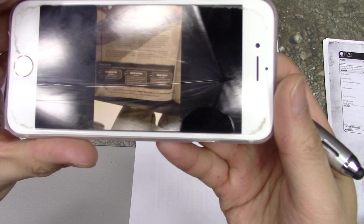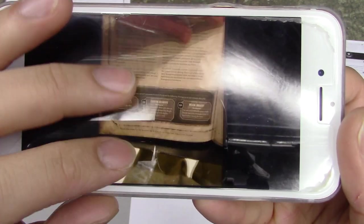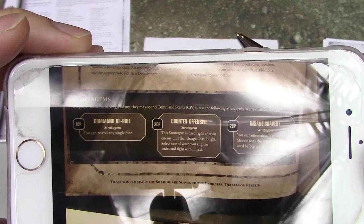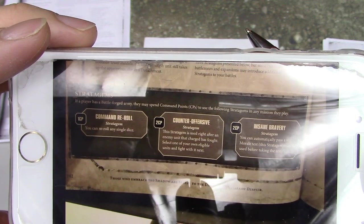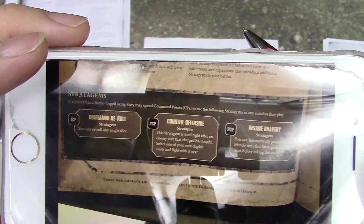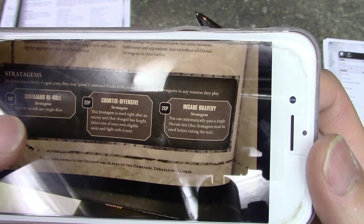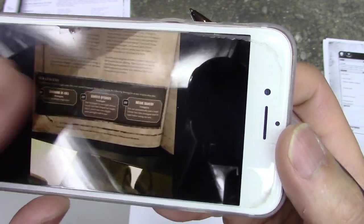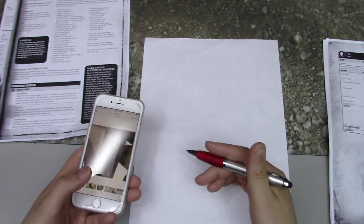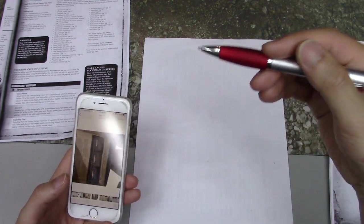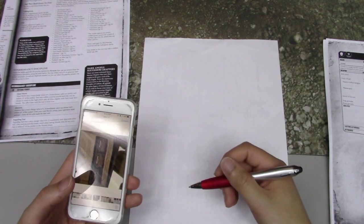Here are the only three stratagems you can use right now. For one command point, you can re-roll any one dice per phase. For two command points, you can interrupt the order of combat so your unit fights next. And for two command points, you can automatically pass a morale test. Very useful, especially at the end of the game or if you really need your unit to stick around.